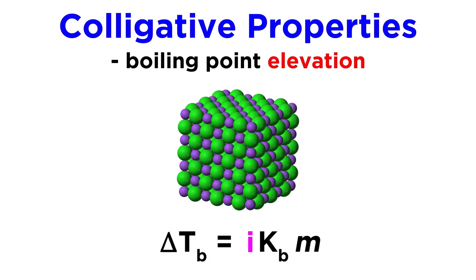This will be incorporated into the equation calculating the boiling point elevation, so delta T equals the Van't Hoff factor times Kb times molality.